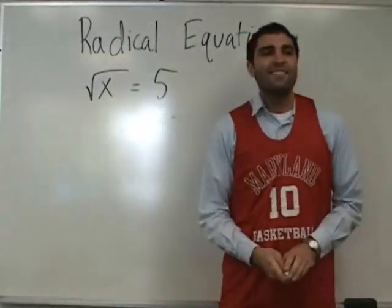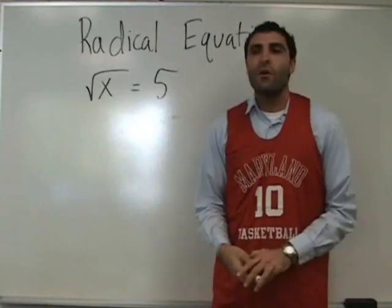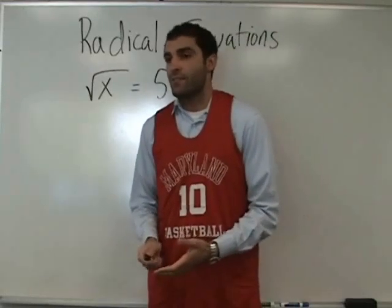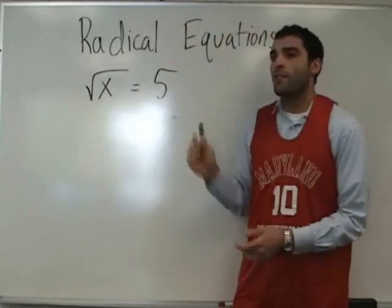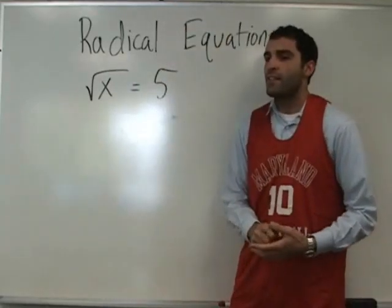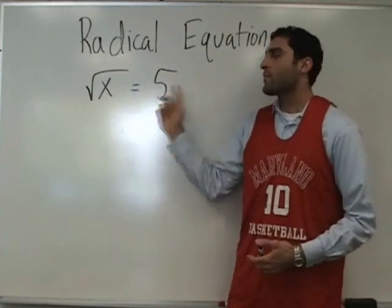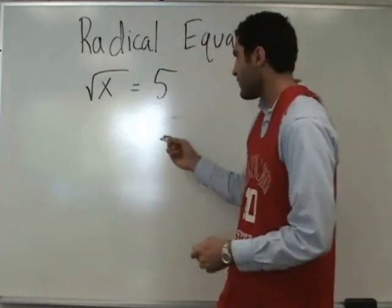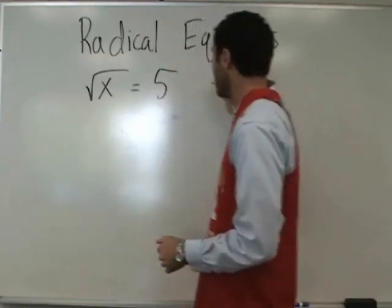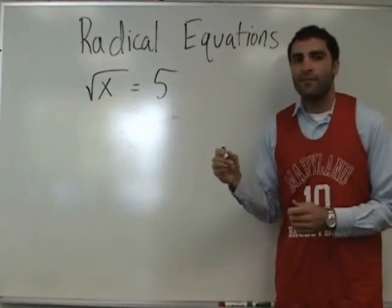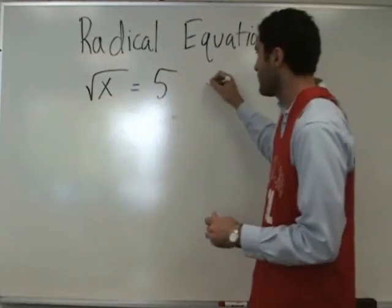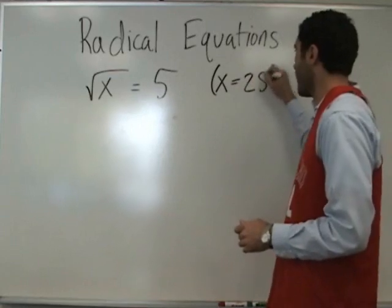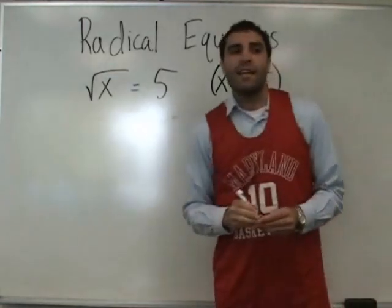So what would X be? We're solving equations, we're solving for X now. What is X? The square root of what number is 5? 25. X is 25. X equals 25.